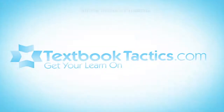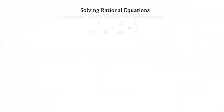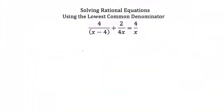This is a tutorial on solving rational equations. There are two basic methods for solving rational equations. The most common one is to use the lowest common denominator. The lowest common denominator is the least common multiple of all the denominators of all the terms in an expression. For example,